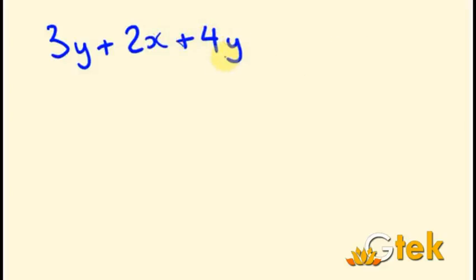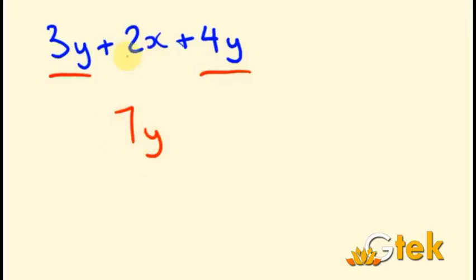Another example: 3Y plus 2X plus 4Y. Notice the Y component appears twice — 3Y and 4Y. Simply adding them: 3Y plus 4Y is 7Y. The remaining component is 2X. So the simplified expression is 7Y plus 2X.